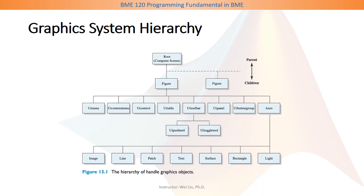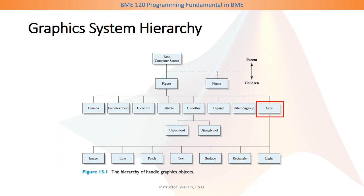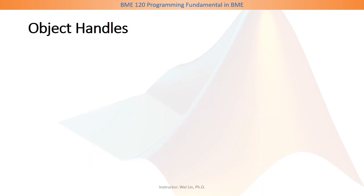Here is the graphics system hierarchy. You start with root, which is a computer screen. Then we define a figure window. Under the figure window, we define axes — we can have multiple axes inside one figure window. And inside an axis, we can have image, line, and text.